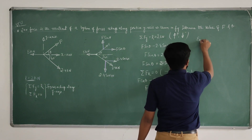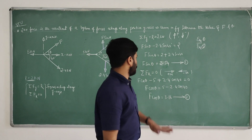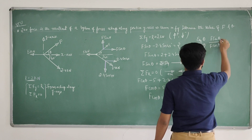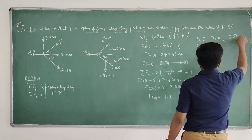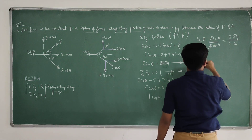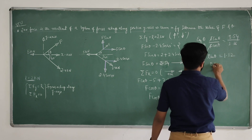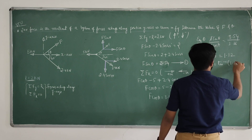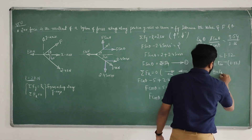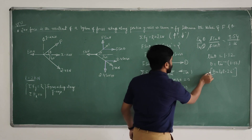Now divide equation 1 by equation 2. F sin theta divided by F cos theta equals tan theta, which equals 3.54 divided by 3.16, giving tan theta equals 1.12. Therefore theta equals tan inverse of 1.12, which is 48.26 degrees.